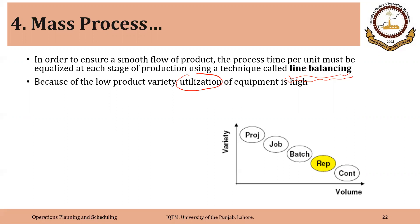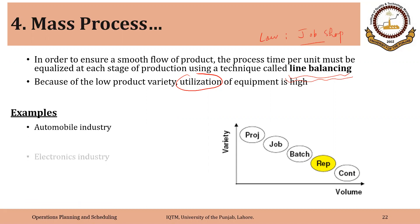Utilization of equipment was very low in job shop, sort of in between in a batch process, but it is generally very high in a line process. Almost all assembly lines are examples of a line or mass process.